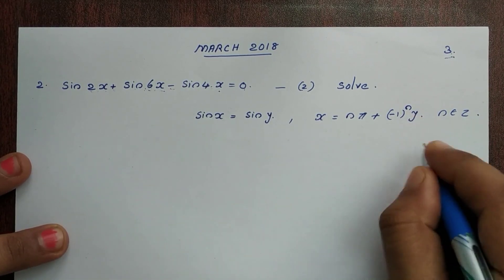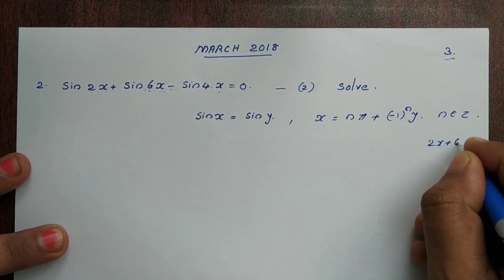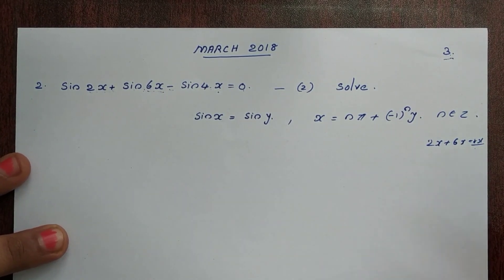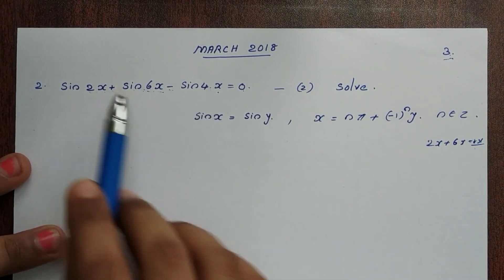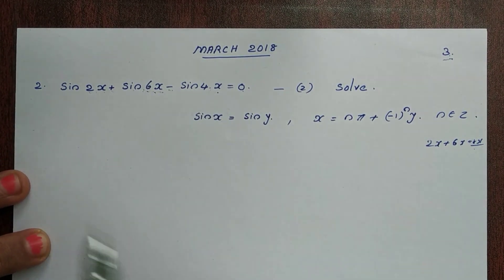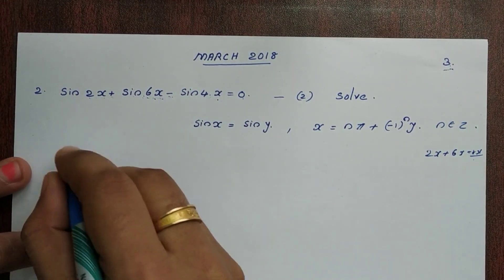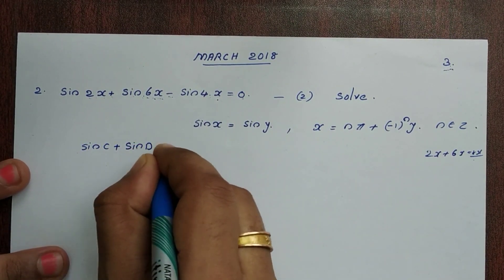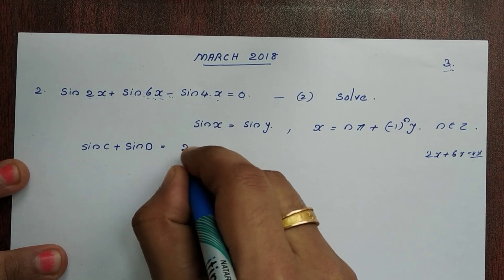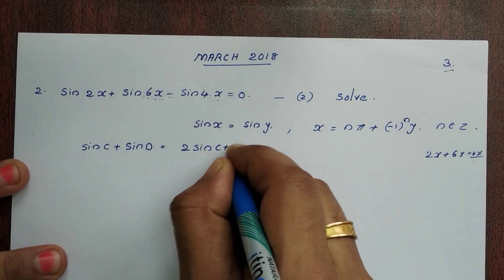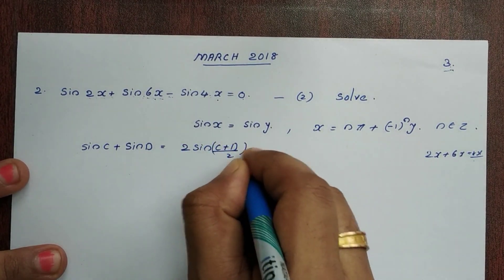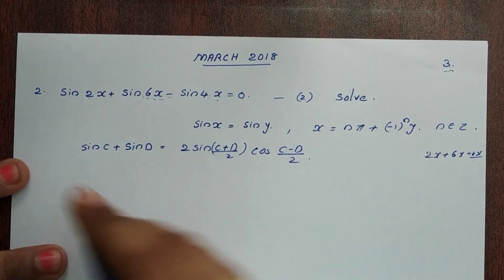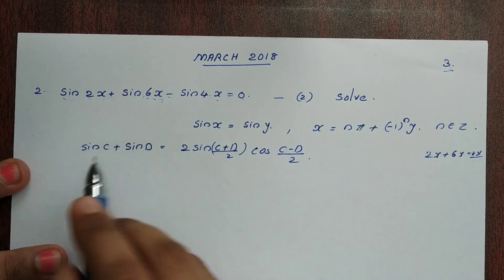We have the terms 2x and 6x. So 2x plus 6x equals 8x, and 8x divided by 2 equals 4x. We will apply the sum-to-product formula to the terms sin2x and sin6x. We have three terms in total: sin2x, sin6x, and sin4x.